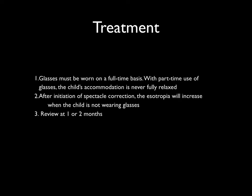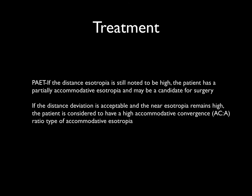The child needs to be evaluated at 6 to 8 weeks. If the squint with glasses is within 8 to 10 prism diopters for distance as well as near, with no asthenopic symptoms and good stereopsis, the child can be periodically followed up with cyclorefraction repeated periodically. If on follow-up the squint for distance is still high with glasses, the patient has a partially accommodative esotropia and will usually require surgery. If distance deviation is acceptable but near deviation is still high, these children are considered to have a high AC/A ratio.